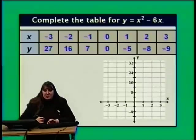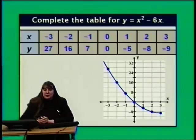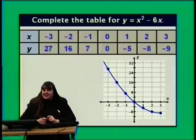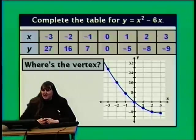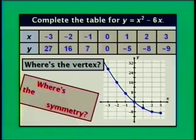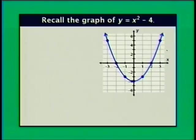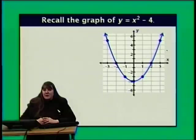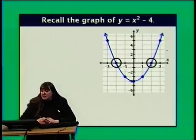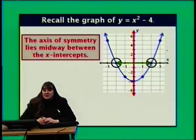Let's plot the seven points we just found and connect them with a smooth curve. Looking at this graph, we should ask: where is the vertex of this parabola, and where is the symmetry? Going back to y equals x squared minus 4, we had two horizontal intercepts at (negative 2, 0) and (positive 2, 0). The axis of symmetry lies midway between the x-intercepts — the x-intercepts were two units to each side of the axis of symmetry.